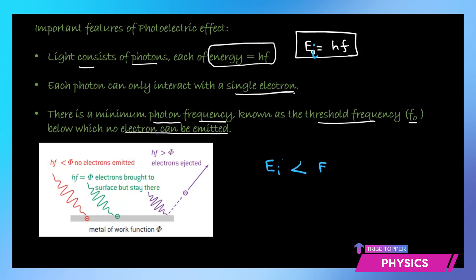If the incident energy is less than E0 — the threshold energy — then the electrons will not be ejected. Only corresponding to a particular frequency, that is the threshold frequency F0, will the electrons be emitted. So there is a minimum photon frequency, which we call the threshold frequency, to make electron ejection possible.